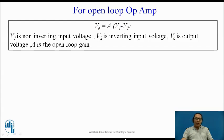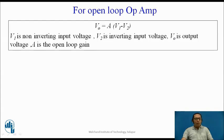Let us have a look at how a typical open-loop op-amp works. If V1 is the voltage applied to the non-inverting terminal with respect to ground, V2 is the voltage applied to the inverting terminal with respect to ground, V0 is the output voltage, and A is the open-loop gain, then the working of an open-loop op-amp is described by the equation V0 = A × (V1 − V2). In other words, the output voltage equals the differential voltage between the non-inverting and inverting terminals multiplied by the voltage gain.